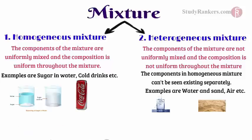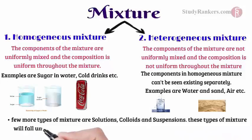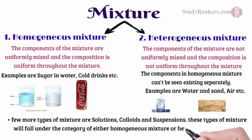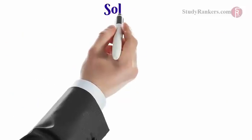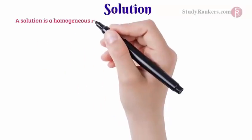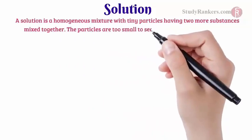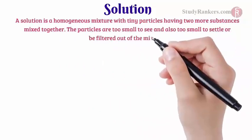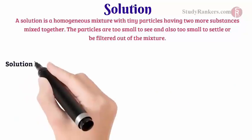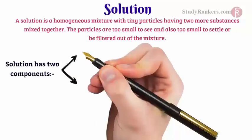There are a few types of mixture we need to know: solutions, colloids, and suspensions. These types of mixture fall under the category of either homogeneous or heterogeneous mixture. Let's start with the solution first. A solution is a homogeneous mixture with tiny particles having two or more substances mixed together. A solution has two components: solute and solvent.